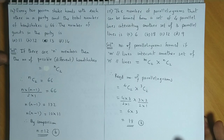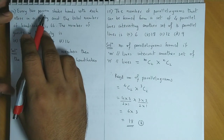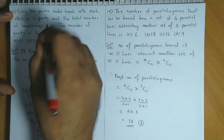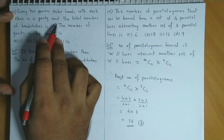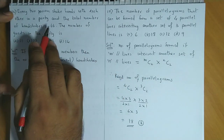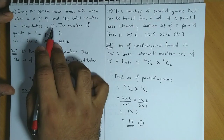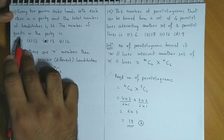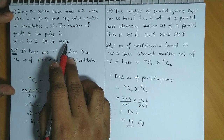Now let's discuss question No. 14. Every two persons shake hands with each other in a party and the total number of handshakes is 66. You have to find the number of guests in the party. Options are 11, 12, 13, or 14.